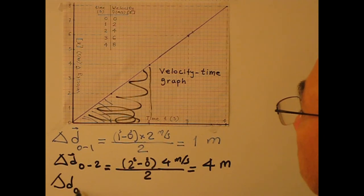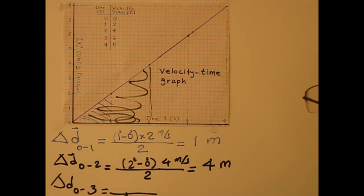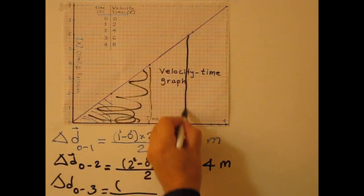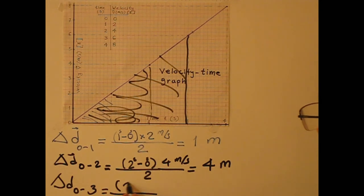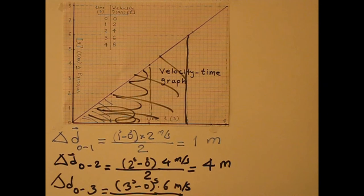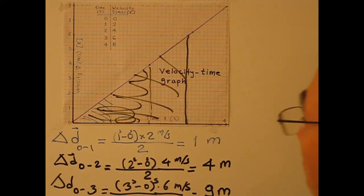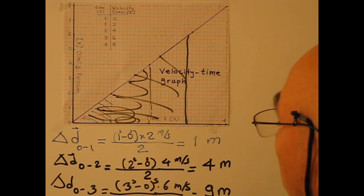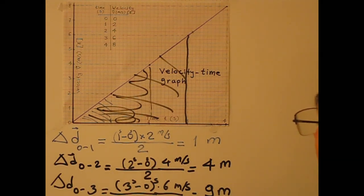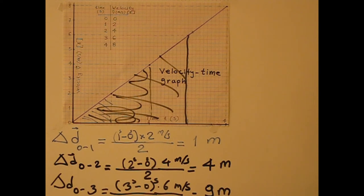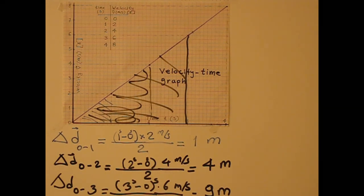Delta D from zero to three seconds: base is three seconds, height is six meters per second, so three times six over two equals nine meters. From zero to four seconds: base four, height eight over two, gives sixteen meters displacement.